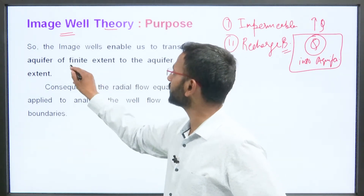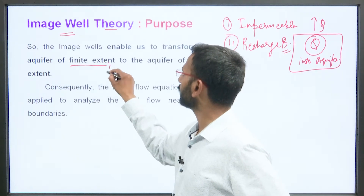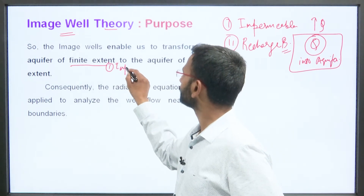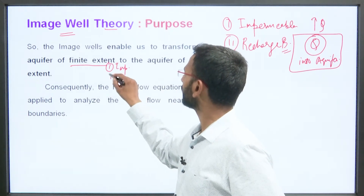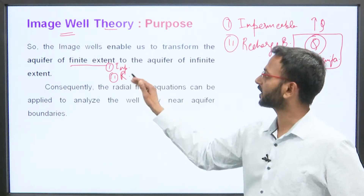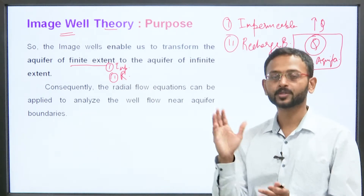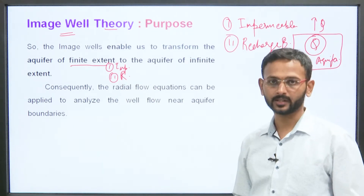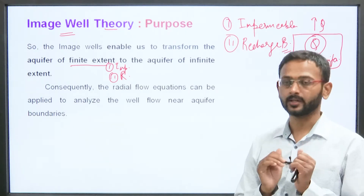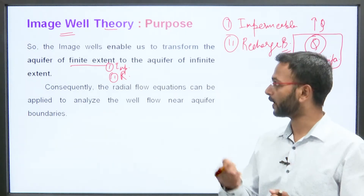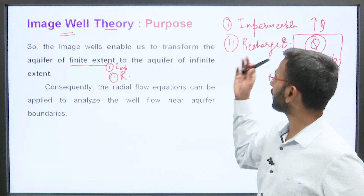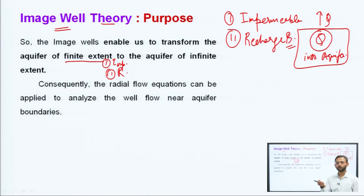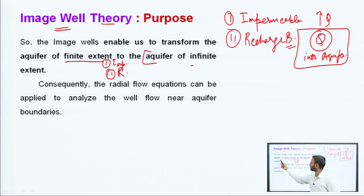Due to the impermeable boundary or the recharge boundary, ek obstruction aa rahi thi us particular pumping well ke liye jahaan se aapko paani withdraw karna tha. Now you have converted that boundary into this image well, aur isi liye wo aquifer of infinite extent ka phir se maan liya jaayega. Consequently, the radial flow equations can be applied now.